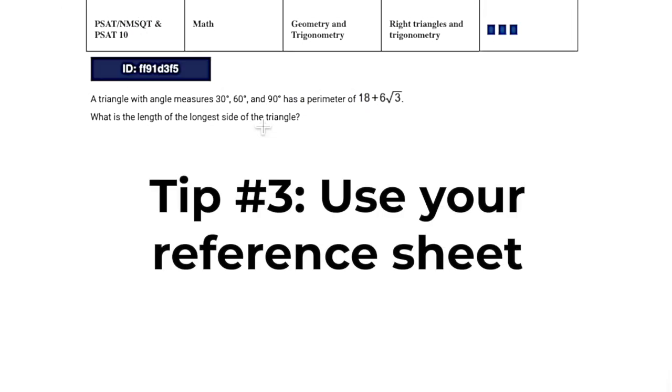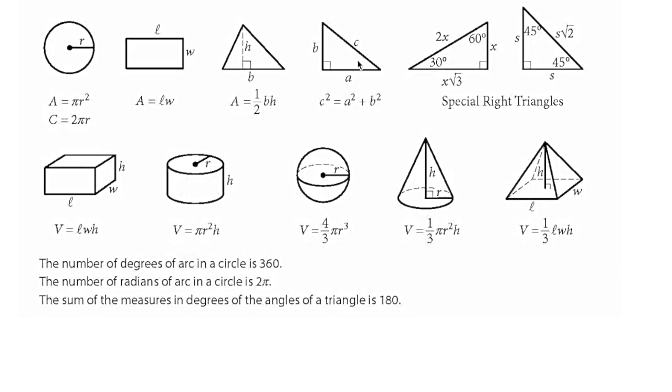Tip number 3. Use your reference sheet. This lovely reference sheet on the PSAT gives you 1, 2, 3, 4, 5 volume equations, area and circumference of a circle, area of a rectangle, area of a triangle, Pythagorean theorem, and the special right triangles, as well as these degrees of arcs, radians of arcs, and the sum of the measures and degrees of the angles in a triangle. So at any point, any of these could pop up and they're really useful to help you get through some of these geometry problems.